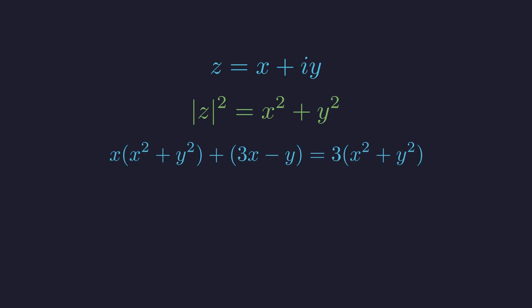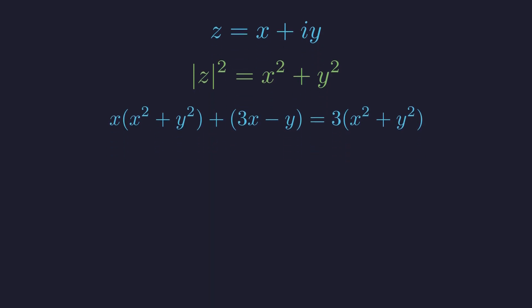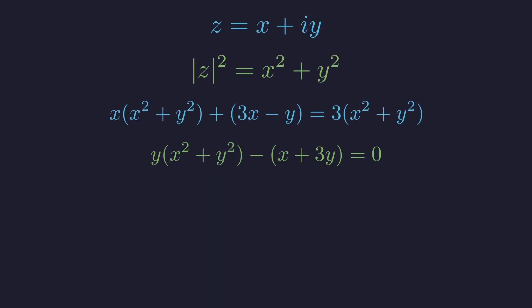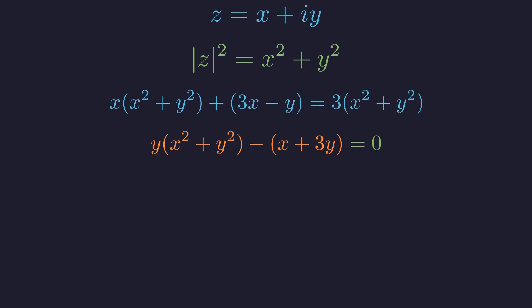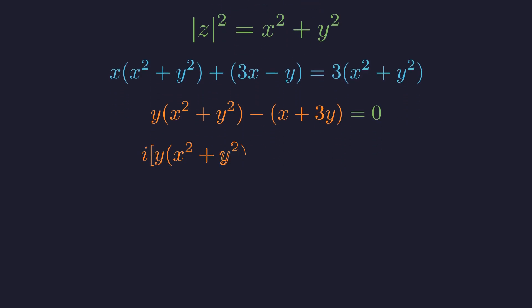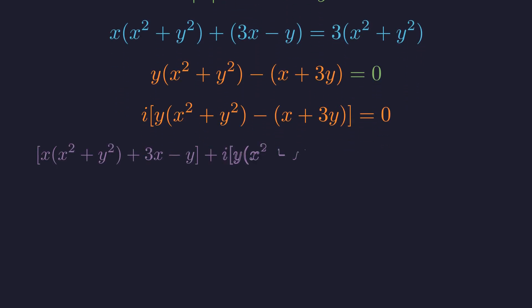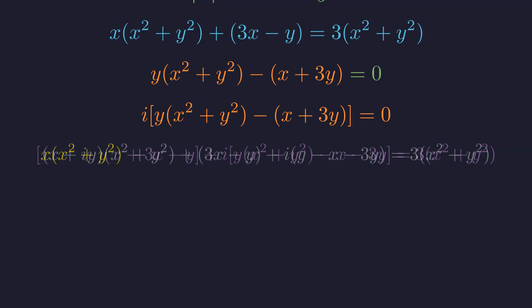Let's rewrite our first and second cleared equations. Now comes the clever part: we'll multiply the second equation by i and add it to the first equation. Multiplying the second equation by i and adding the two equations together, we can factor out x squared plus y squared from the first terms. Factoring gives us x plus iy times x squared plus y squared.